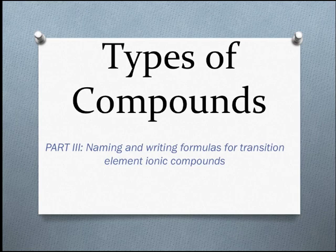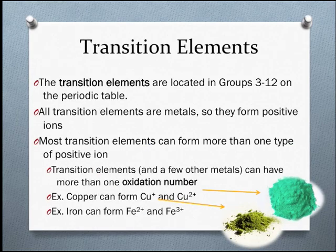Now it's time to learn how to write the names and formulas for ionic compounds that contain transition elements. These are only slightly different from the compounds you've been working with up until now. Recall that the transition elements are the metals located in groups 3 through 12 of the periodic table.